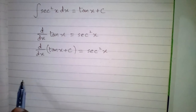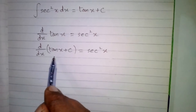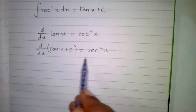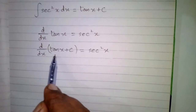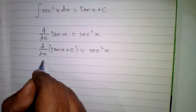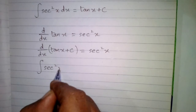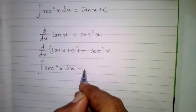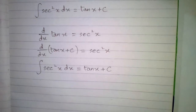So if the derivative of tan x + c is sec²x, then the integral of sec²x is tan x + c. We can write that the integral of sec²x with respect to x is tan x + c.